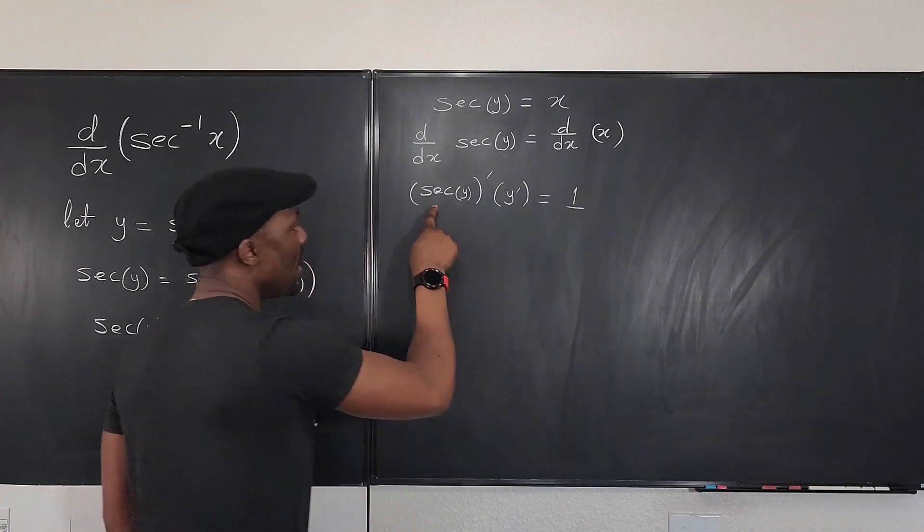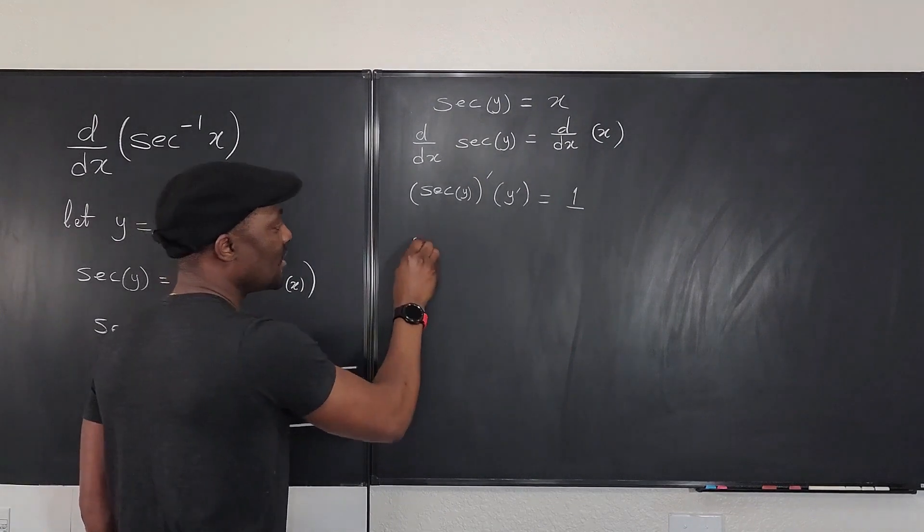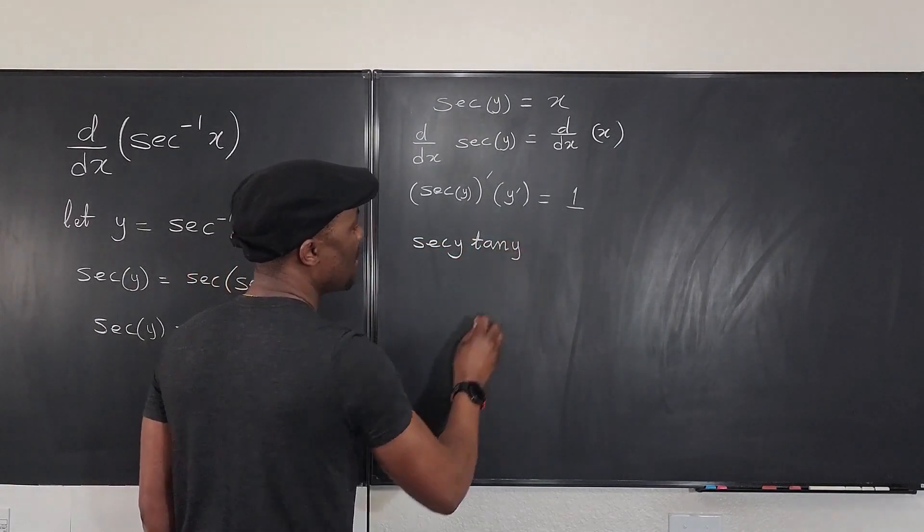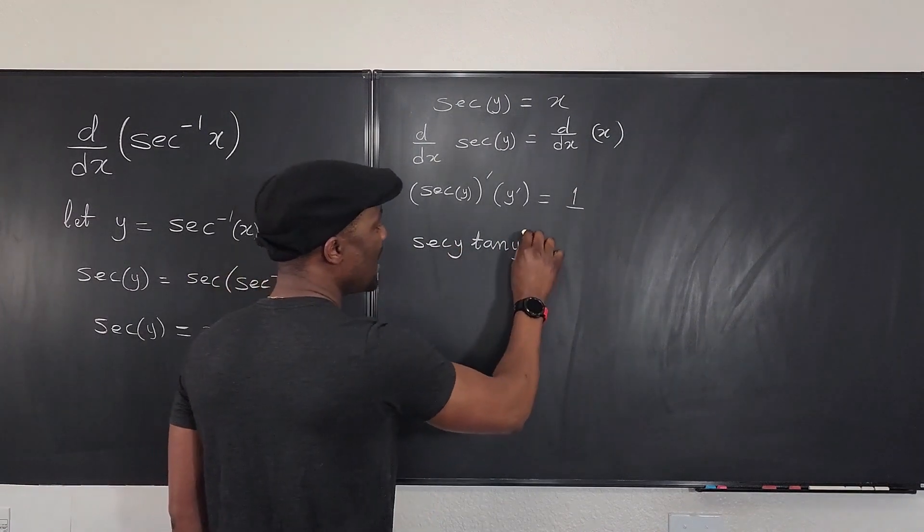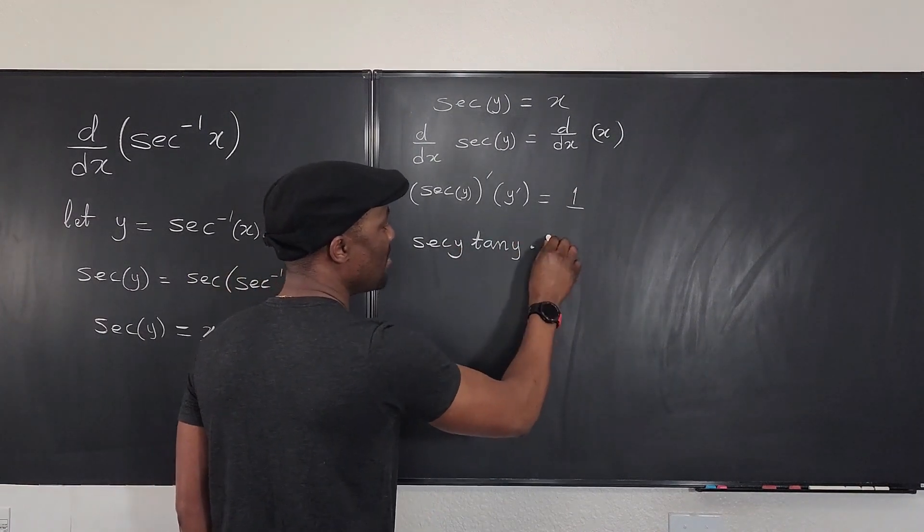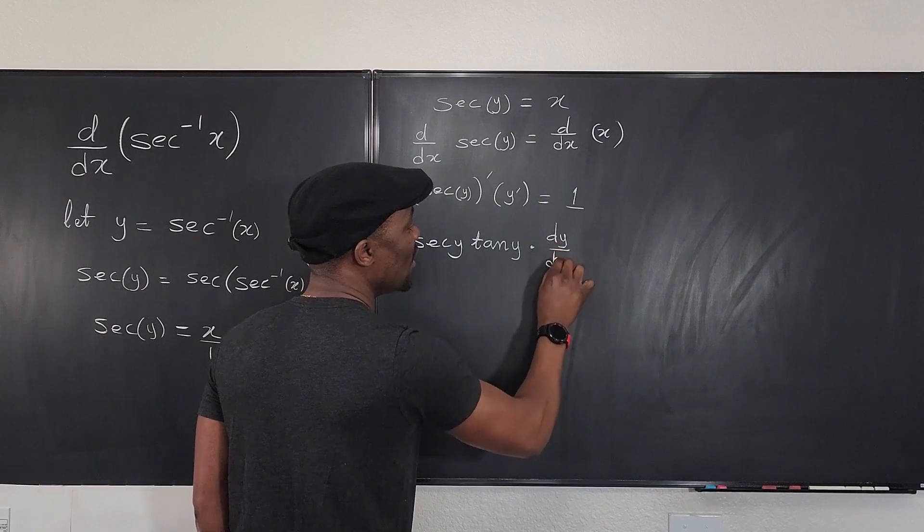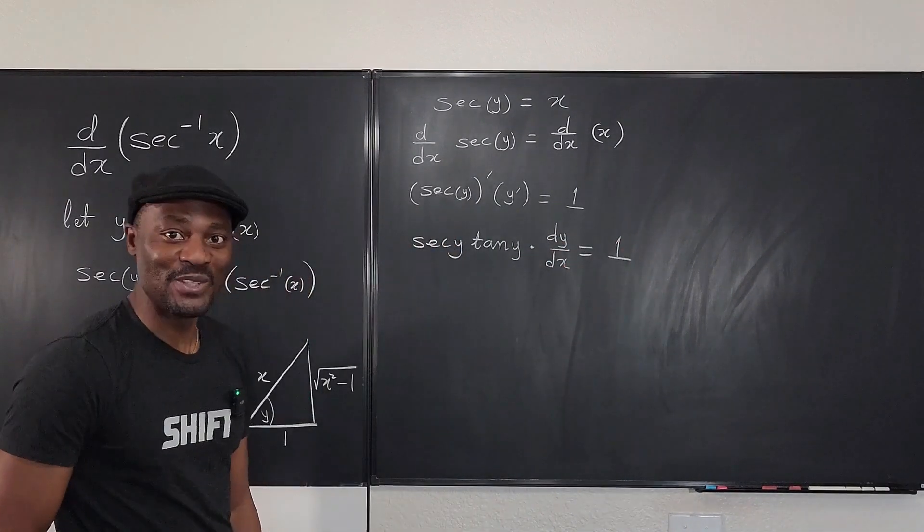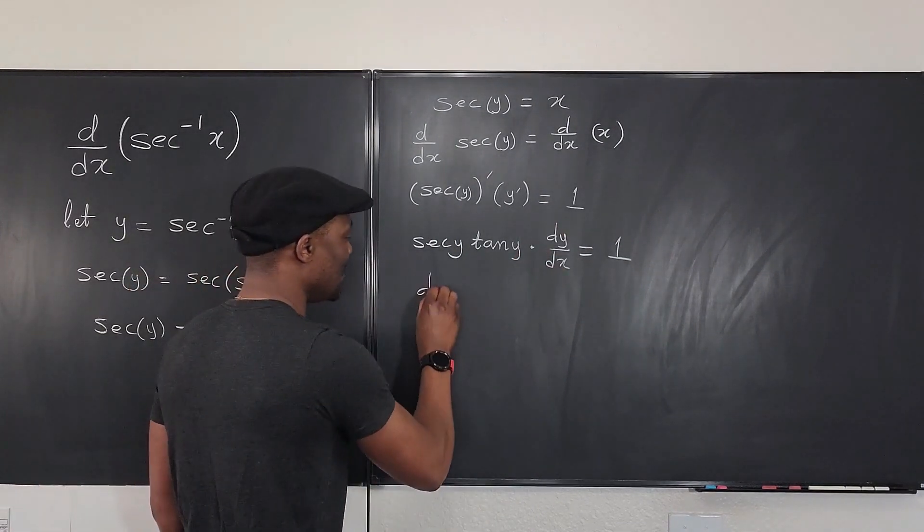What is the derivative of secant y? It's going to be secant y tan y, okay, secant y tan y multiplied by y prime, which is dy/dx. So this is the guy we've been looking for, and it looks like we're almost there.